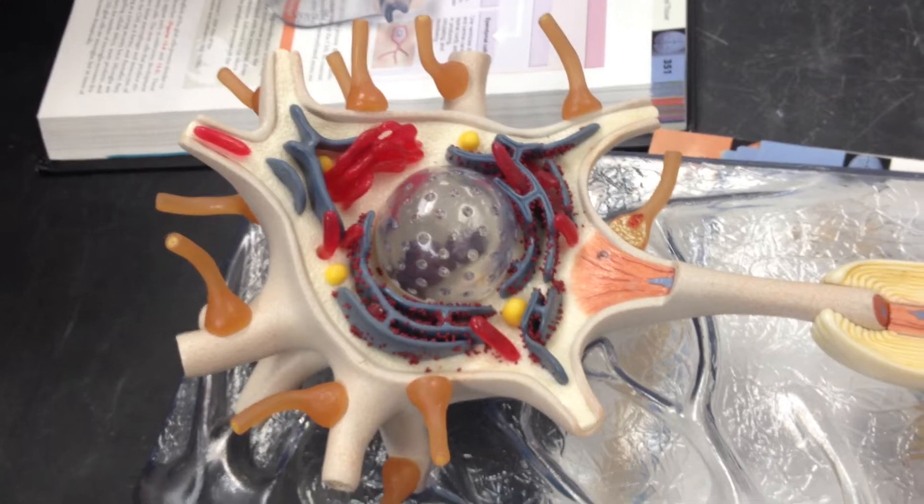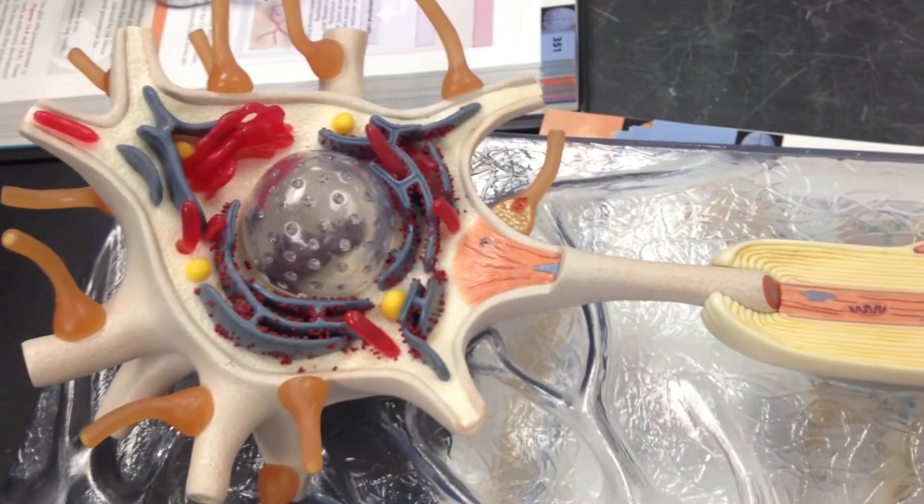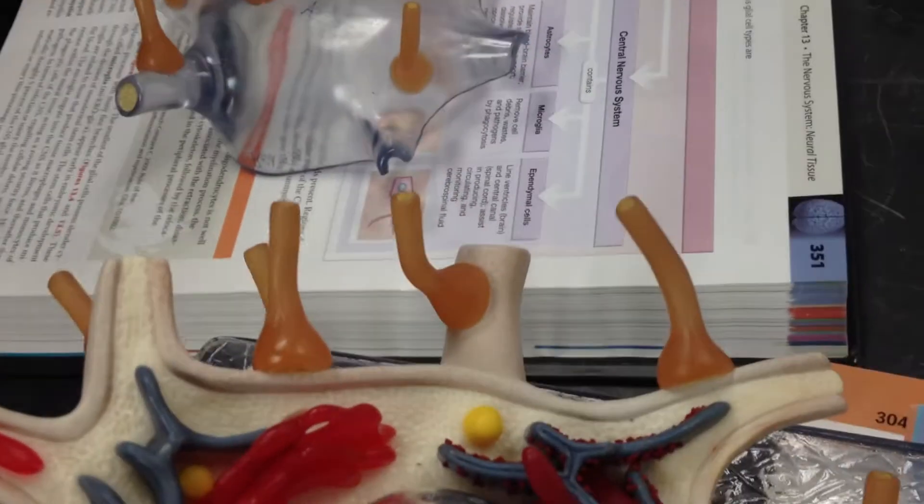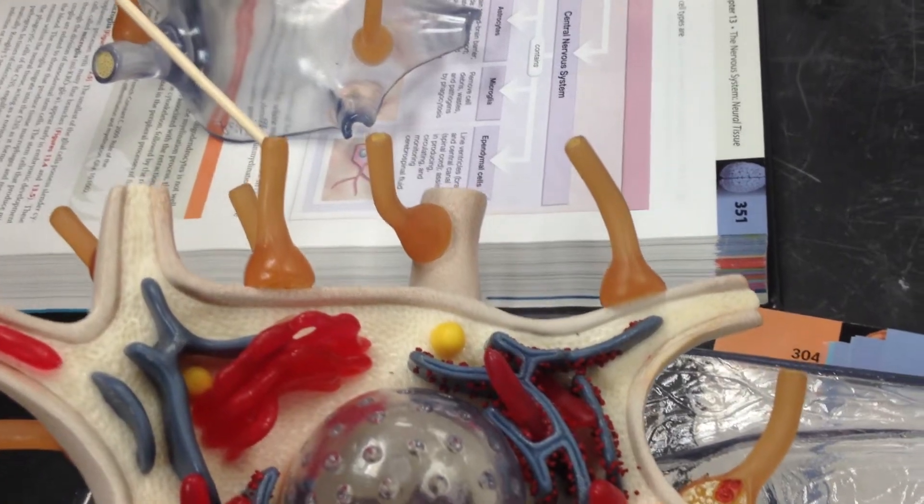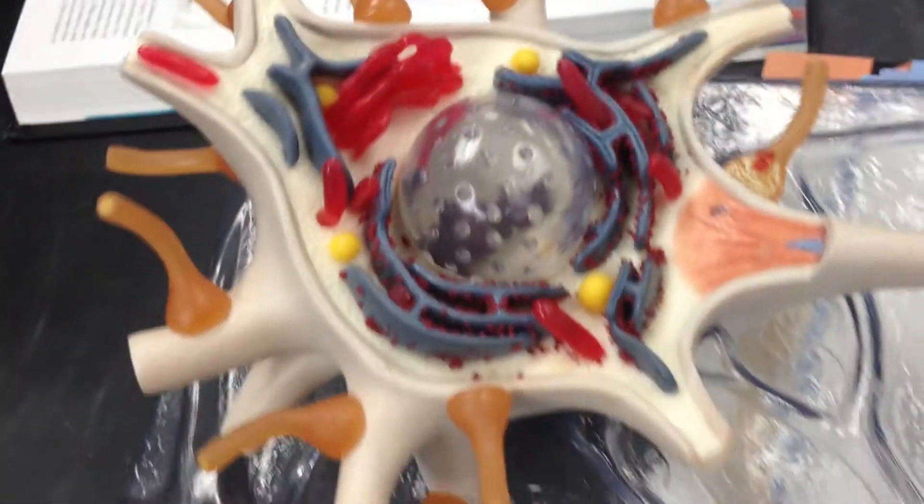And this is the soma, cell body. And the orange parts on there are the terminal boutons of another neuron. And then the soma or cell body. Okay.